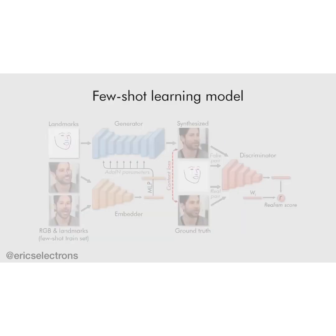After meta-learning, we are able to fine-tune the generator and the discriminator for a new person. The generator and discriminator networks have tens of millions of parameters; still, such fine-tuning is possible on just a few images, thanks to the good initialization provided by the meta-learning stage.